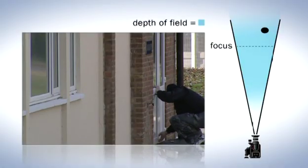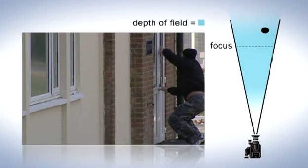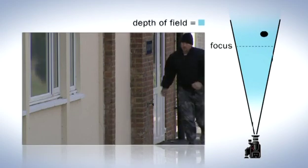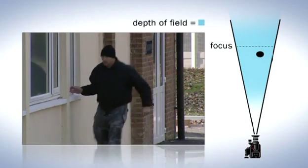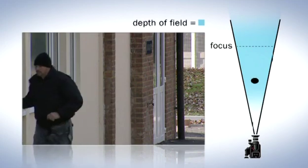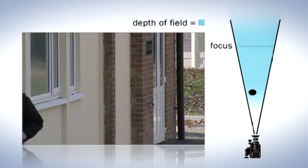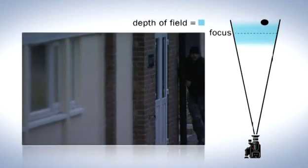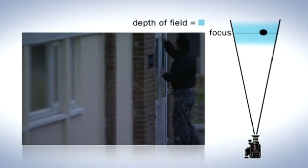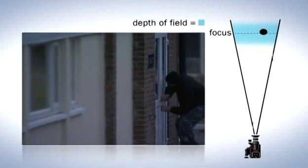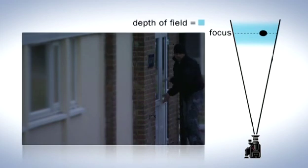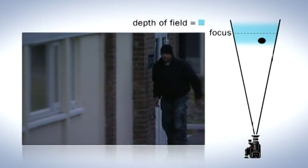The best way to maintain a constant depth of field is to provide appropriate lighting for the scene. In daylight, the camera can use a small aperture, which gives the shot a good depth of field so that the whole area is clearly visible. But in low light conditions, the lens aperture is much larger and the depth of field is greatly reduced. Only a certain portion of the area is now clearly visible.